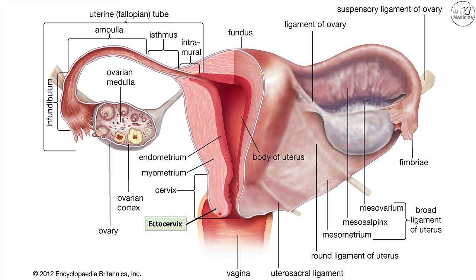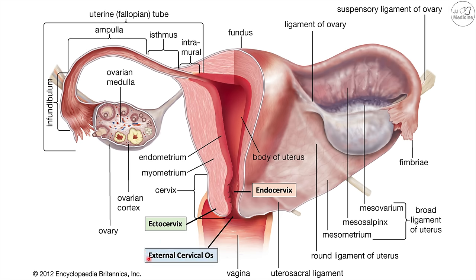The cervix is broken down into the ectocervix and the endocervix. The ectocervix protrudes into the vagina and is visible on a pap smear; it is lined with squamous cells continuous with the vagina. The endocervix is the tunnel connecting the vagina to the uterus and is lined by columnar epithelial cells that produce mucus. There is also the external cervical os — the opening from the vagina into the cervix — and the internal cervical os going from the cervix into the uterus.